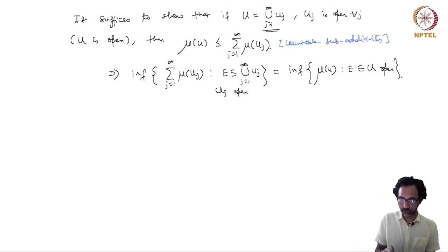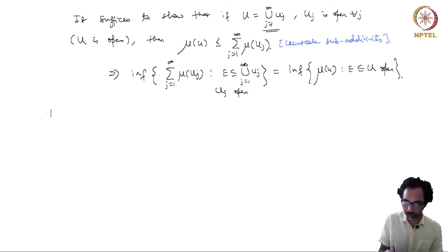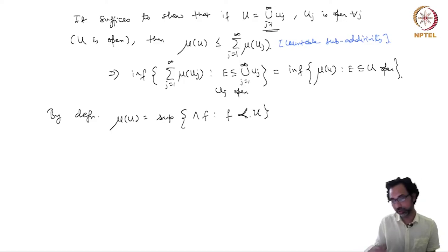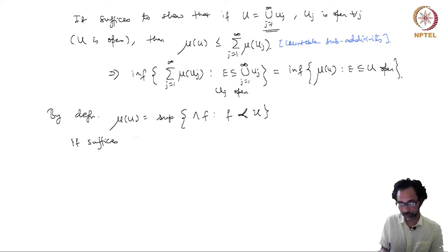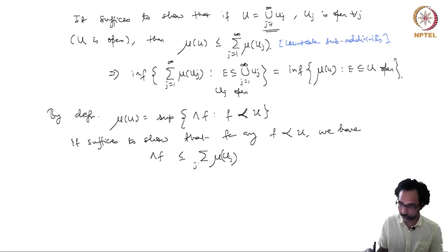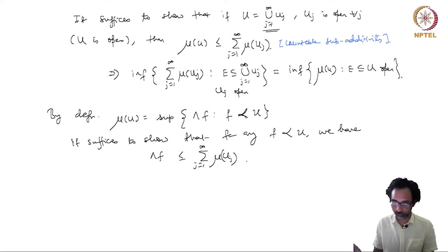By definition, μ(U) is the supremum of λ(f) such that f ≺ U. So it suffices to show that for any f ≺ U, we have λ(f) ≤ Σ_{j=1}^{∞} μ(U_j). Then we can take the supremum on the left and obtain μ(U).